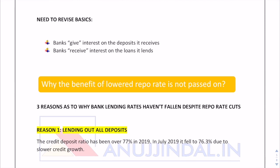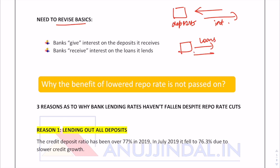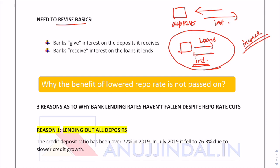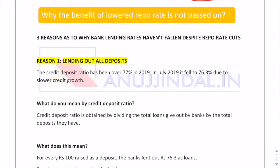To discuss the reasons behind this, we need to revise our basics. You all know that there is a bank — if you give money as deposits to a bank, you get interest on that. If the bank lends you loans, you have to pay the bank interest, and lending loans is the source of income for banks. The question which arises is: why is the benefit of the lower repo rate not being passed on?